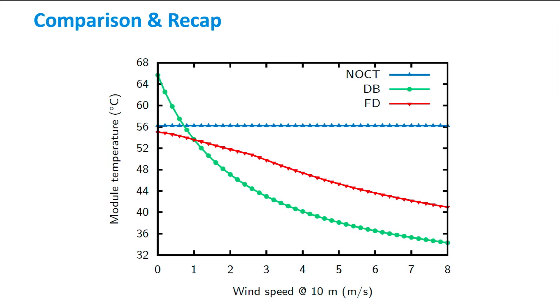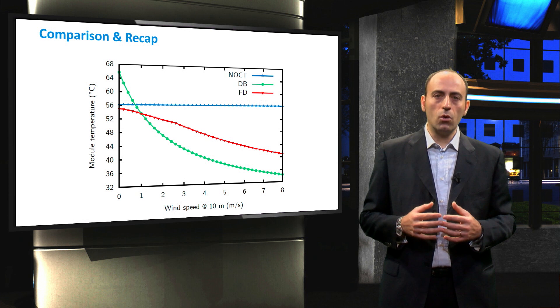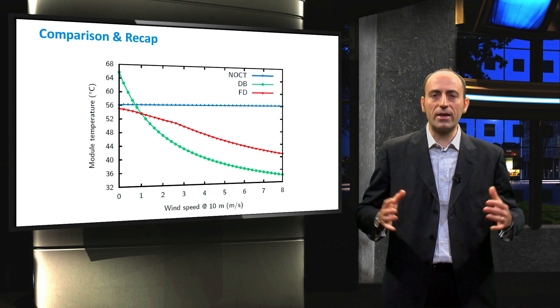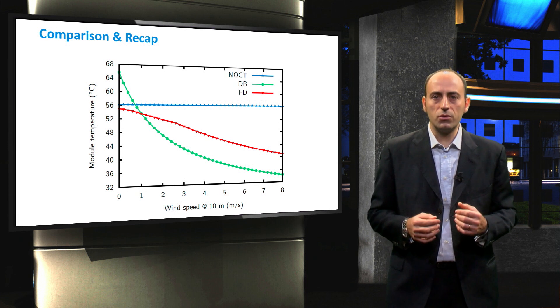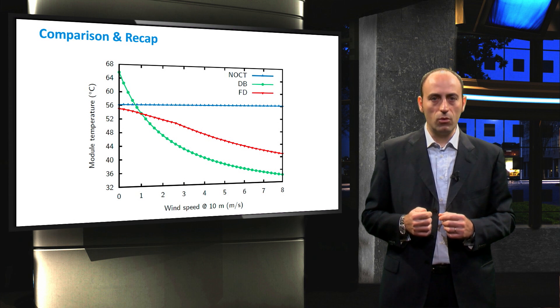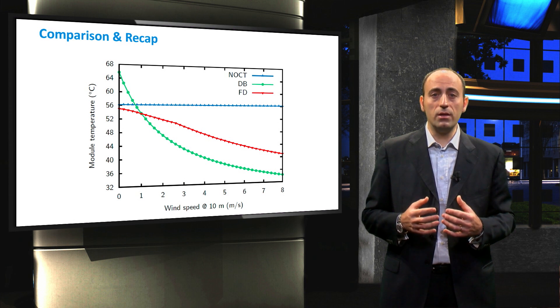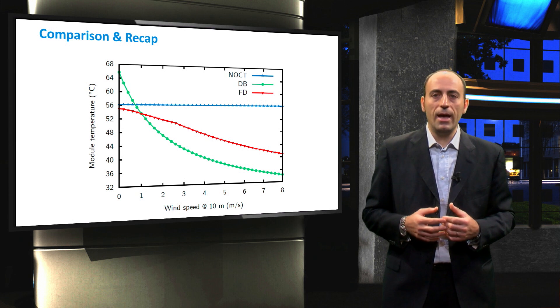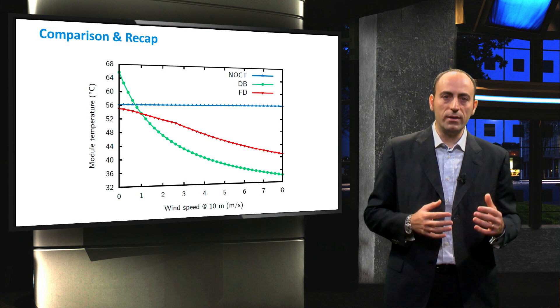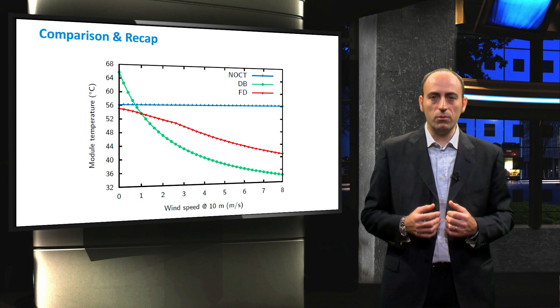Finally, the fluidodynamic model is gentler in the decay and gives a more realistic estimation of the module temperature. To conclude, the NOCT and the DB models constitute two extremes and are easy to use, while the highest accuracy is reached with the fluidodynamic model. The downside is that this last model is also the most complex. At 3 meters per second, even the step indicating the threshold between turbulent and laminar flow is modeled with this model.